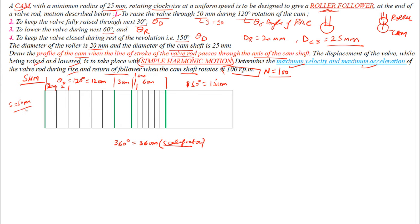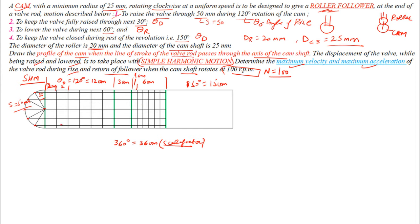Draw a semicircle on the left side with radius equal to half the follower stroke (25 mm). Divide this semicircle into 6 equal parts — each division is 30°. From each division point, draw horizontal lines across to intersect the vertical lines above each division of the ascent, and mark those intersection points.